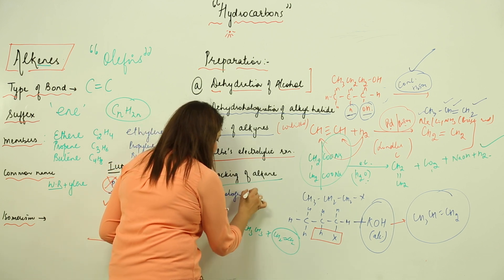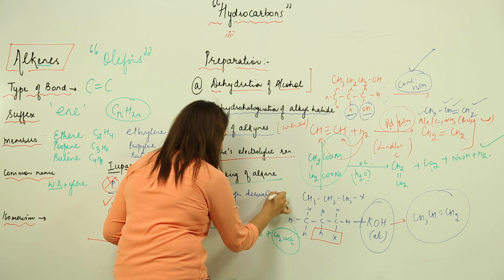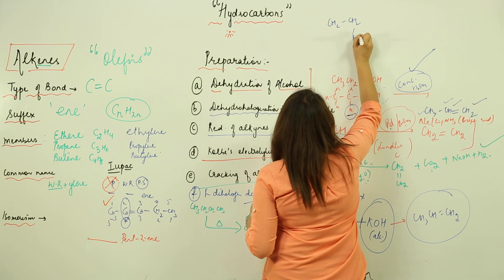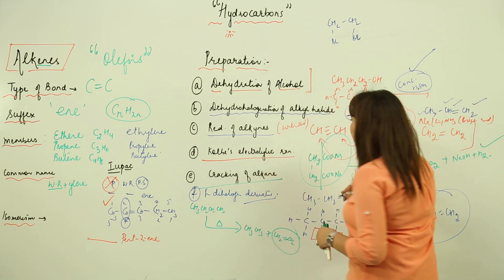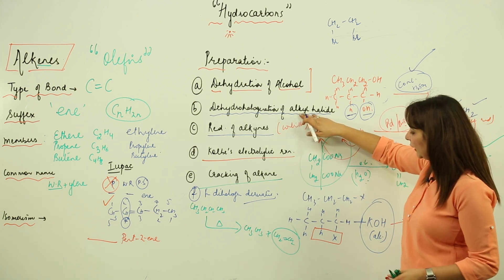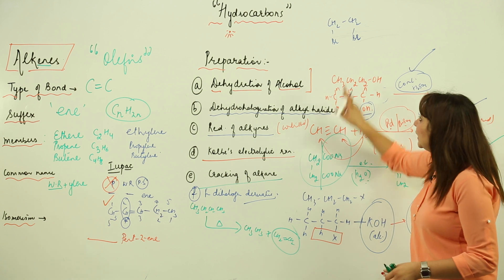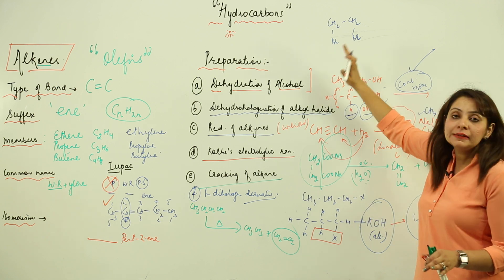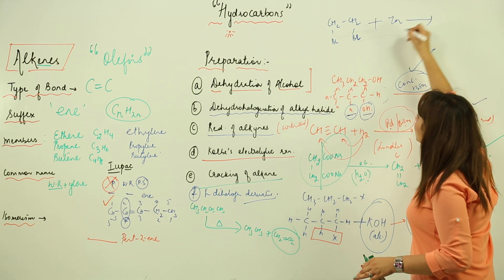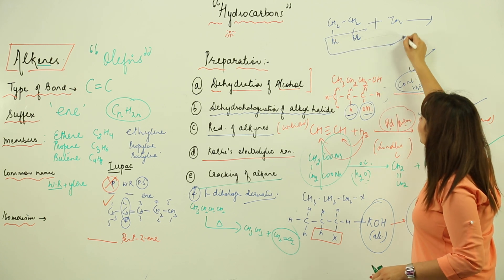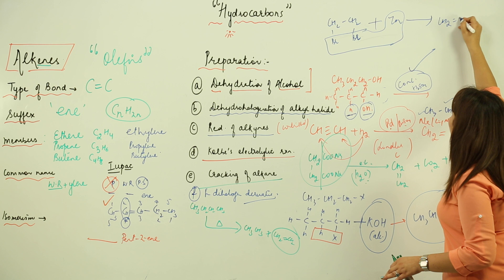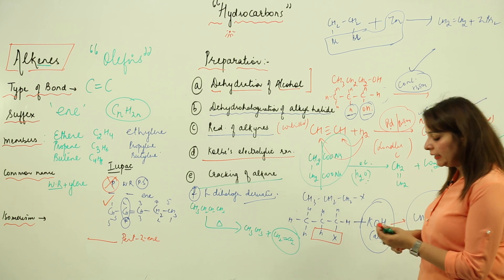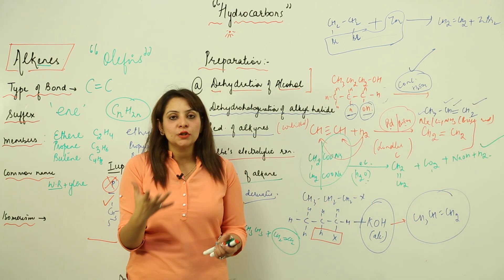One more method is from a dihalogen derivative. Unlike dehydrohalogenation where X is on one carbon and H on another, here two halogens are attached to adjacent carbons. When reacted with zinc dust, both halogens are removed, yielding ZnBr2 as a byproduct and an alkene. The carbon atoms form a double bond to satisfy their valency.